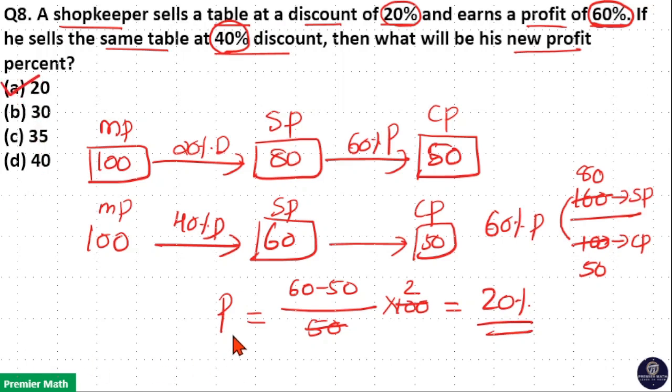Option A is your answer. The profit formula is selling price minus cost price divided by cost price times 100. So this is the profit formula.